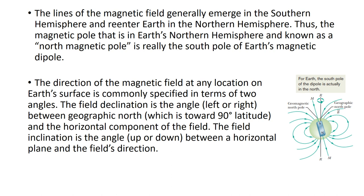The magnetic field direction at any location on the Earth's surface is determined in terms of two angles. The first is field declination — the angle between geographic north and the horizontal component of the magnetic field in that area, which is the left-right angle. The second is field inclination — the angle between the horizontal plane and the field direction, which is the up-down angle.